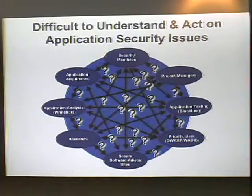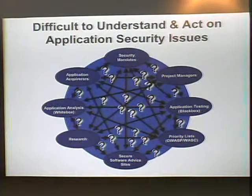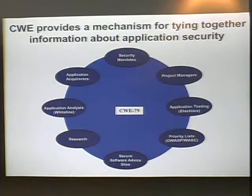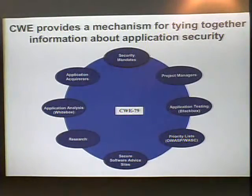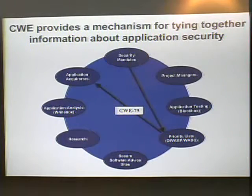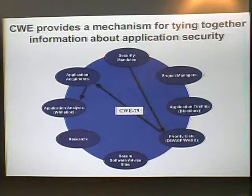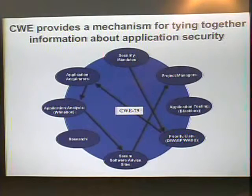One way of looking at CWE is as a Rosetta Stone that brings these different groups together so they know they're talking about the same issue. For instance, CWE-79 — cross-site scripting — is one of the tops. The idea is that a mandate about cross-site scripting says make sure all applications are tested for that. How critical is it in the OWASP Top Ten? Pretty high up. So you tell people acquiring applications to look for it, talk to service suppliers and vendors about it, look at what your applications are doing to address those kinds of issues, look at advice sites, and ask project managers if they have time for testing and have looked at that issue.